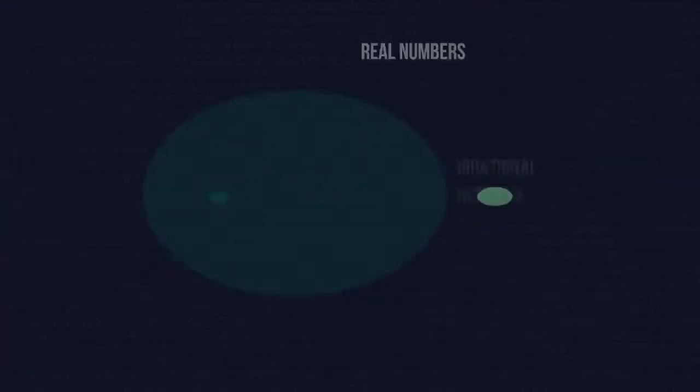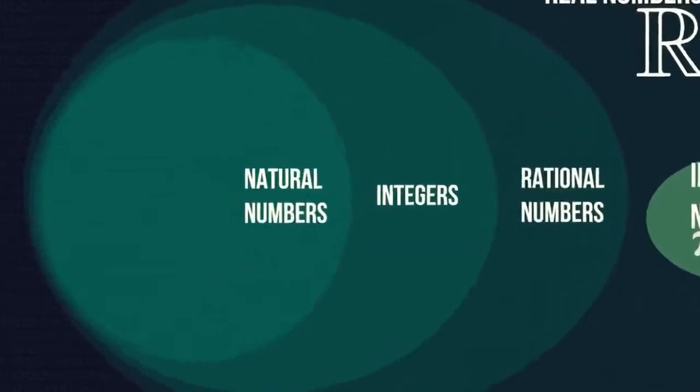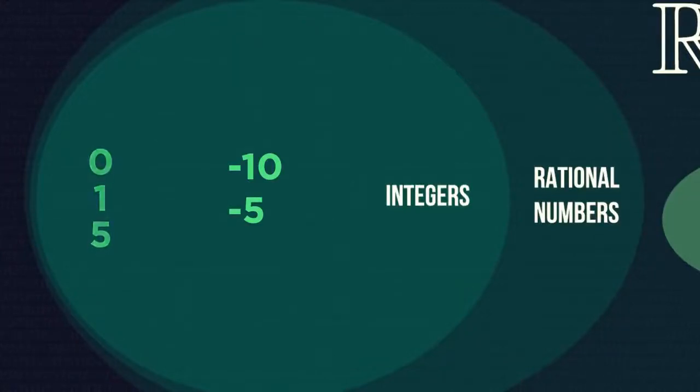Now, back to rational numbers. These can be separated down further. Natural numbers and integers. Integers are any positive whole numbers, negative whole numbers, zero.